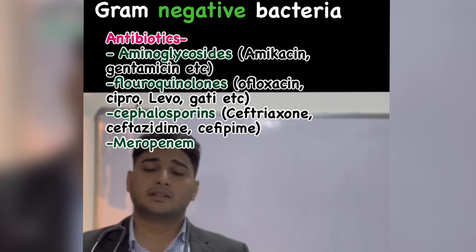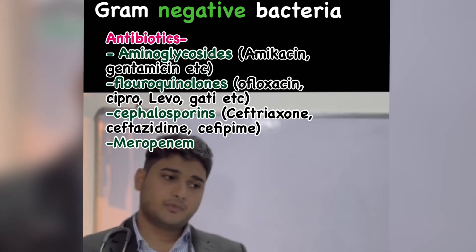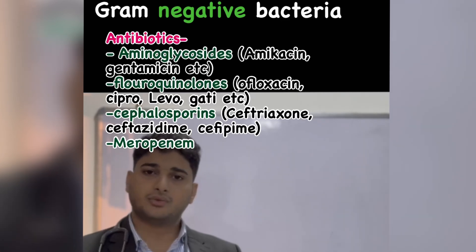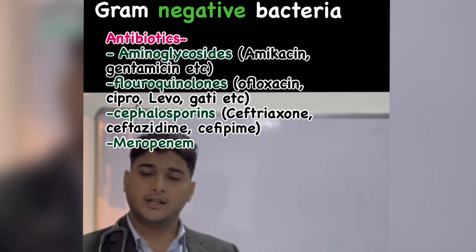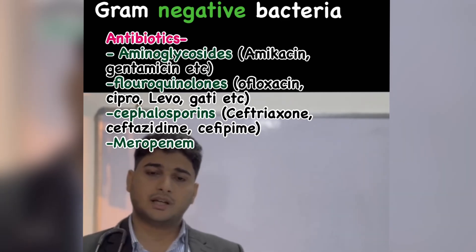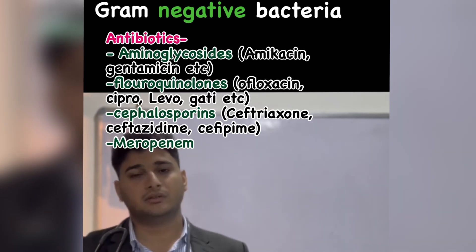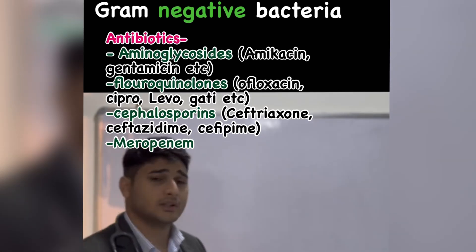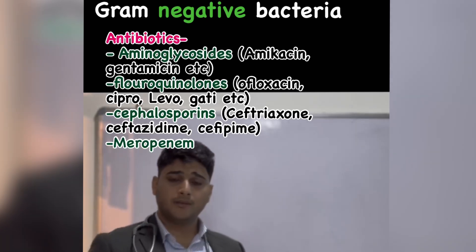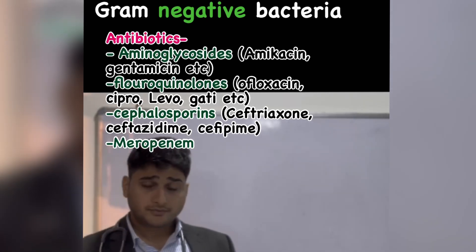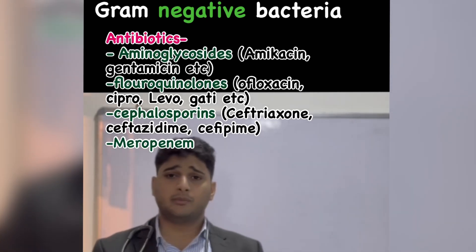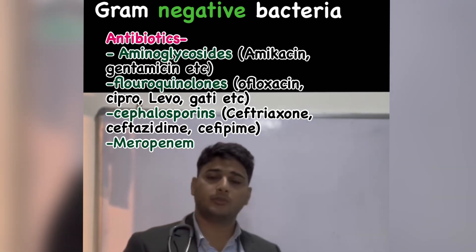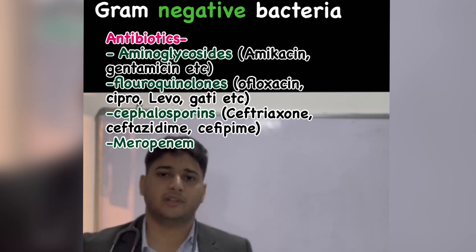Other options are cephalosporins, which range from 1st generation to 5th generation. 1st generation is mainly for gram-positive, but as you move up the generations, they cover gram-negative mainly, and sometimes even atypicals. 3rd and 4th generation cephalosporins — like ceftriaxone and cefepime — are mainly for gram-negative infections. And then there are carbapenems like meropenem, which cover the whole spectrum of disease.